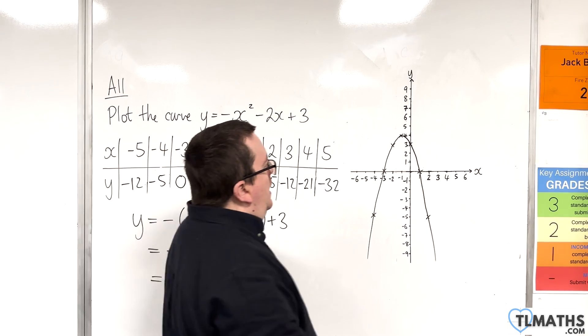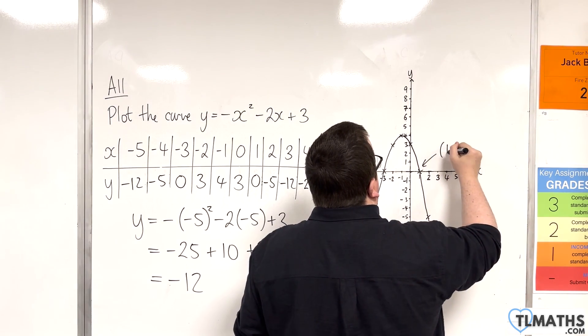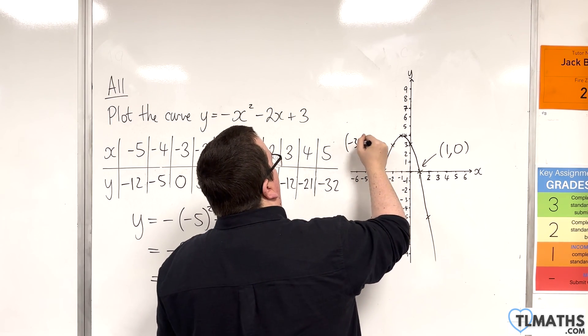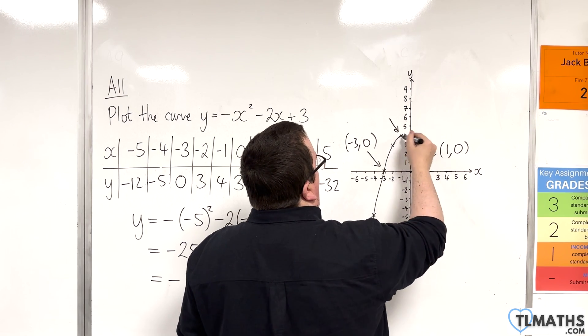Roots. There are two roots where the curve's crossing the x-axis. So when x is 1 and at x is minus 3. We've got a turning point at minus 1, 4.